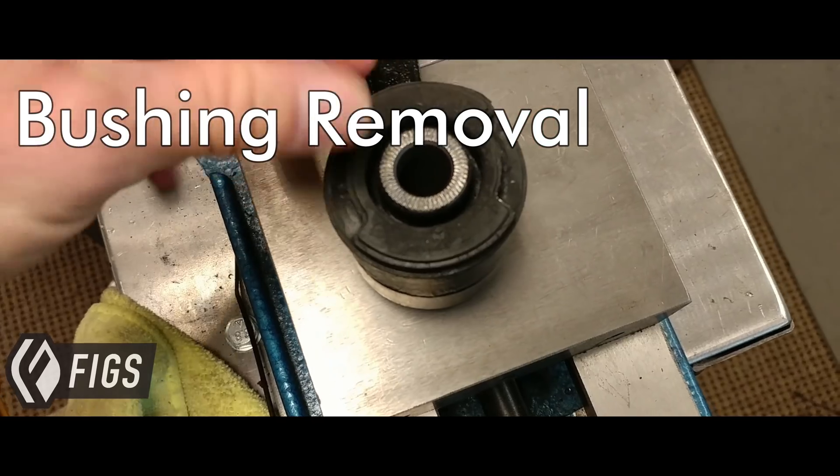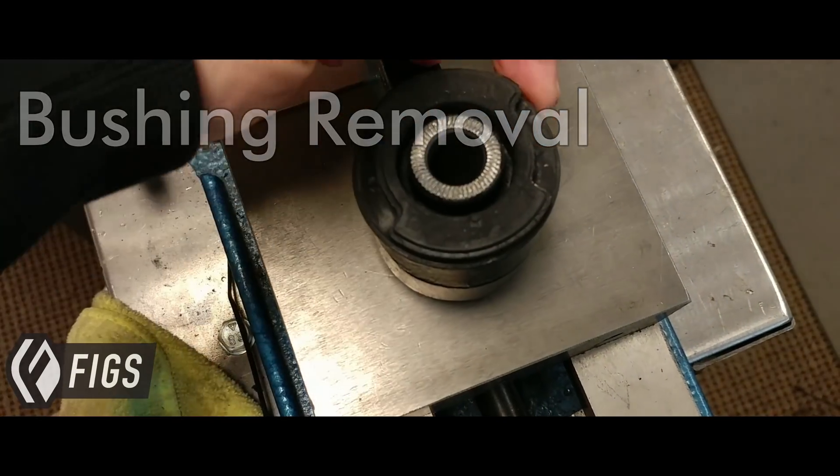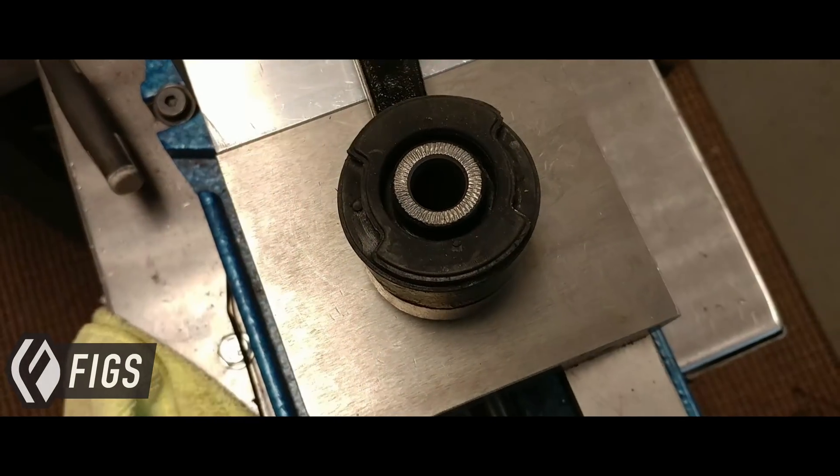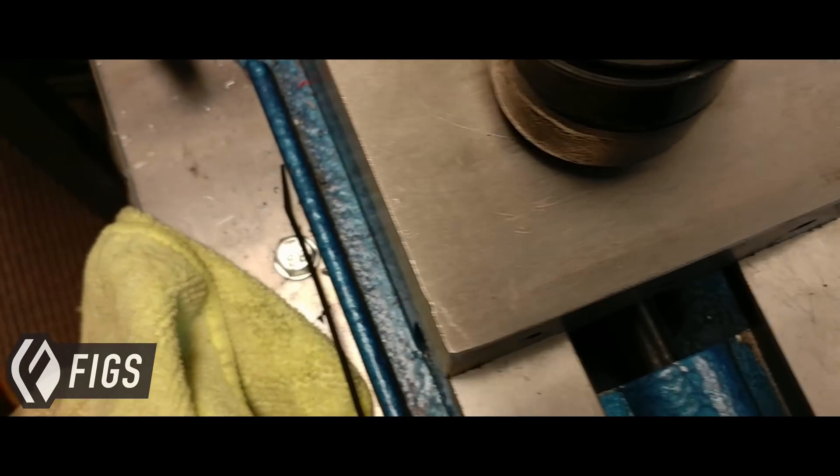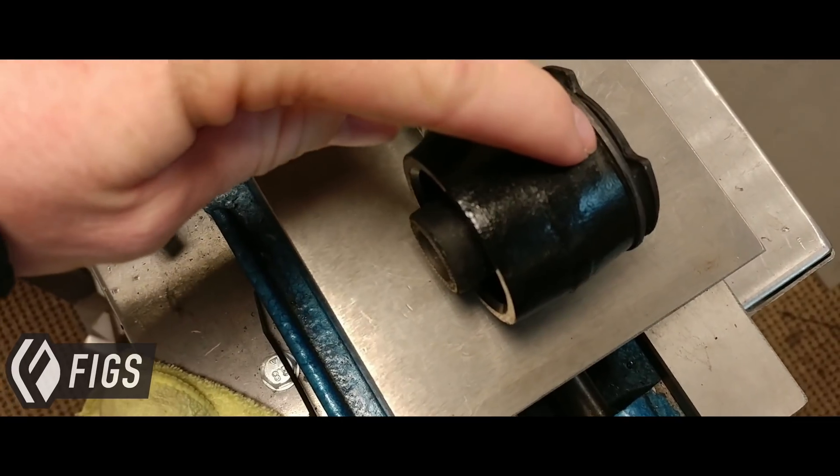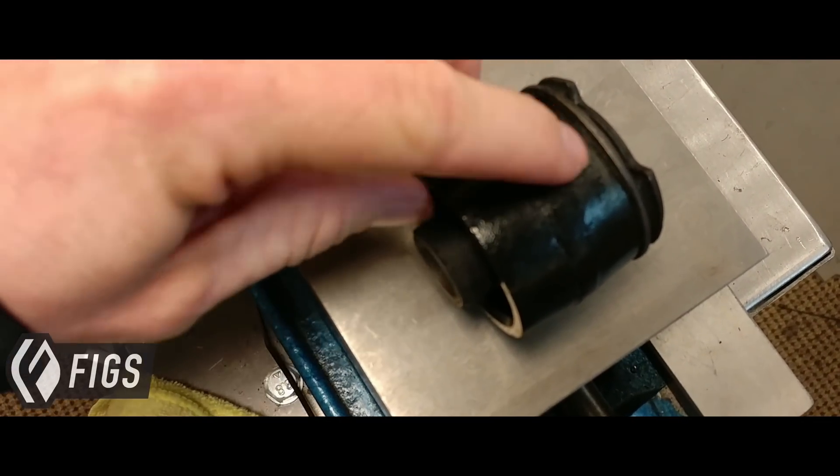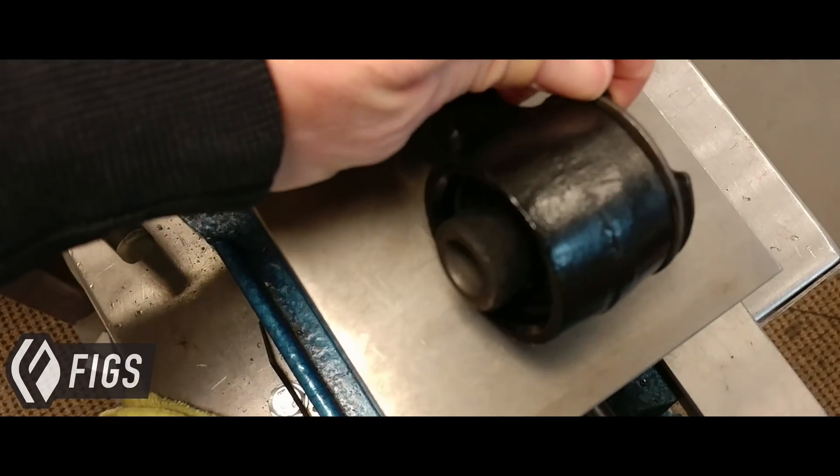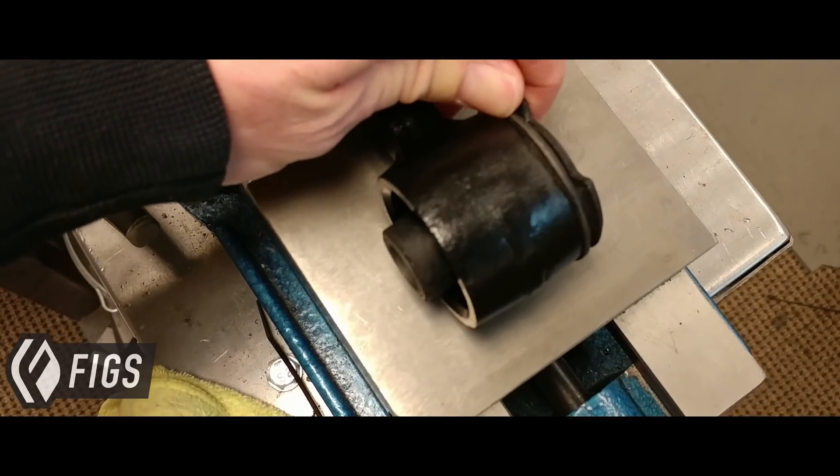We're going to go through how to get this guy out of here. We're just going to start by folding in these two edges right here, and that's going to allow us to press that thing out from the other side. So you can see these bushings are installed from one way and they have a little flange. We have to fold that flange over to expose the arm underneath.